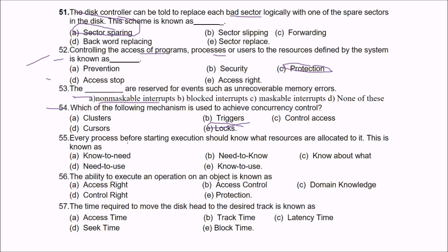Question 55: Every process before starting execution should know what resources are allocated to it. This is known as need to know — every process before starting execution should know what resources are allocated to it.